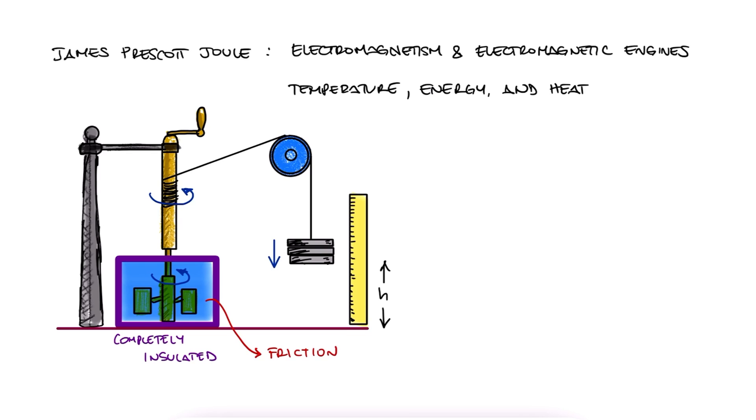This friction between the paddles and the water generated heat, and with it, the temperature of the water began to increase. He effectively used quantifiable work in the form of gravitational potential energy to bring up the temperature of a substance, or in other words, to produce heat.